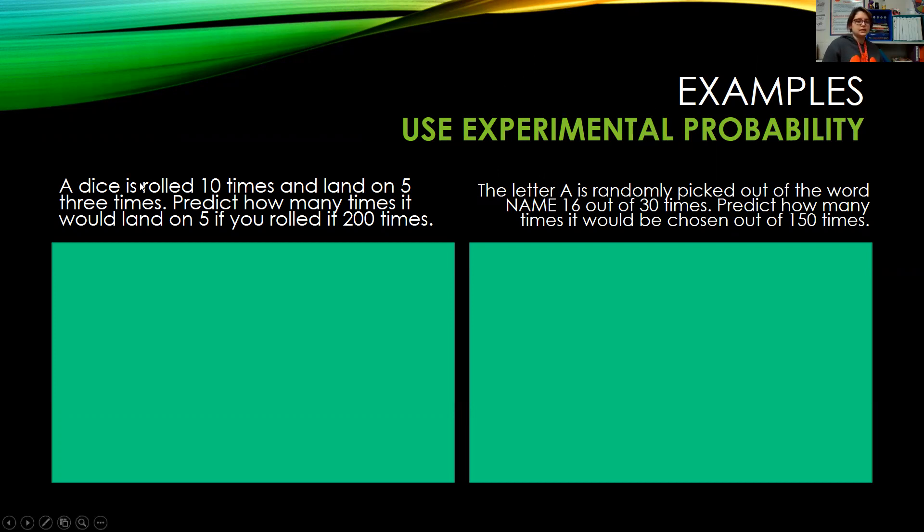So our first one says, a dice is rolled 10 times, and it lands on 5 3 of those times. So our experimental probability, the total number of trials was 10, and we got 5 3 times. Predict how many times it would land on 5 if you rolled it 200.